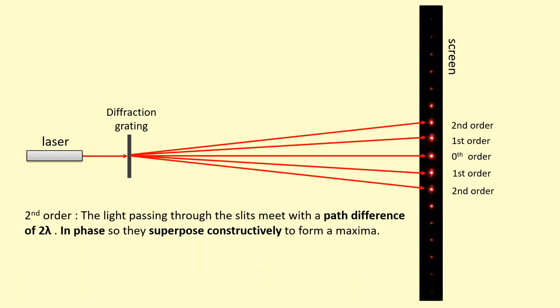So the second order here is formed, as you can guess, when the path difference between the different waves going through the slits is two lambda, two lots of wavelengths. So they're still in phase and they superpose constructively to form a maximum.